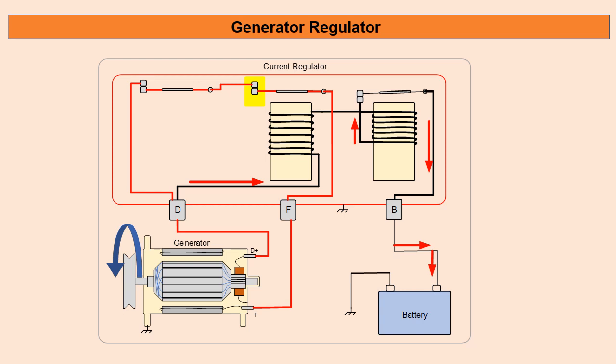Now we're looking at the current regulation. You can see the current path shown by the red arrows. It goes through the actual coil of the current regulator. It then travels through the reverse current relay contacts and then down to our battery.